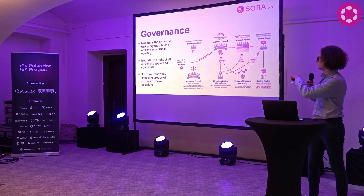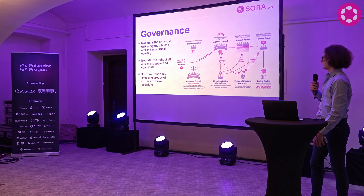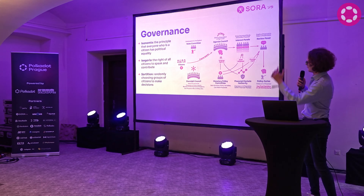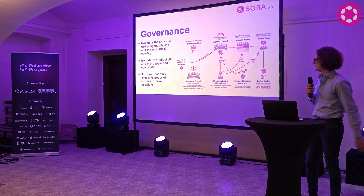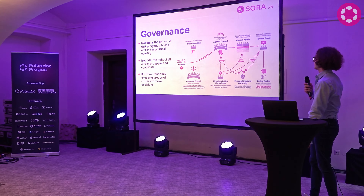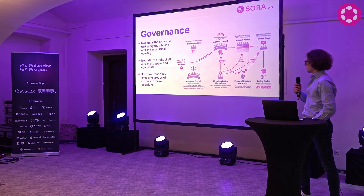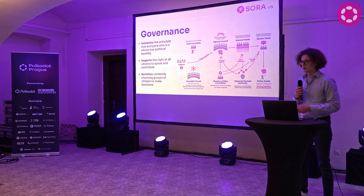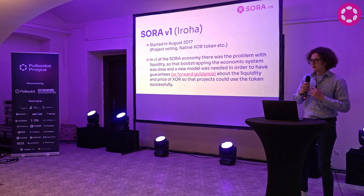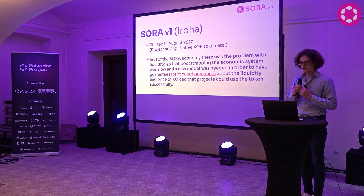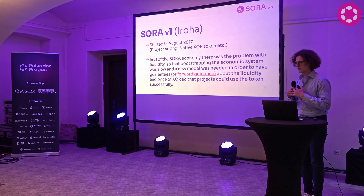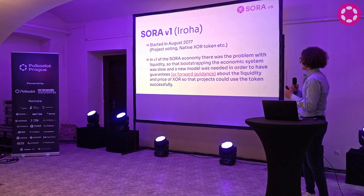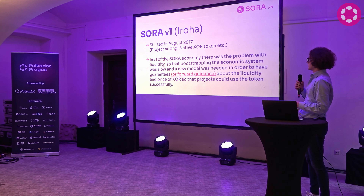We based the governance on Athenian principles — specifically isonomia and sortition. Isonomia is about political equality: everybody can vote, speak, and contribute. Sortition means we randomly pick the groups who are making the votes. Keeping all of this in mind and implementing Sora on this relatively traditional theory, we came up with Sora, which was initially based on the Hyperledger Iroha blockchain and launched in 2017.